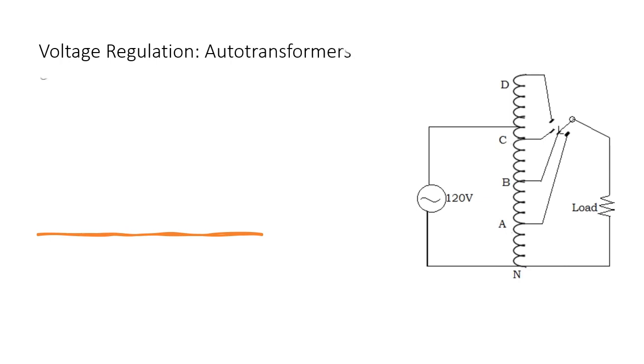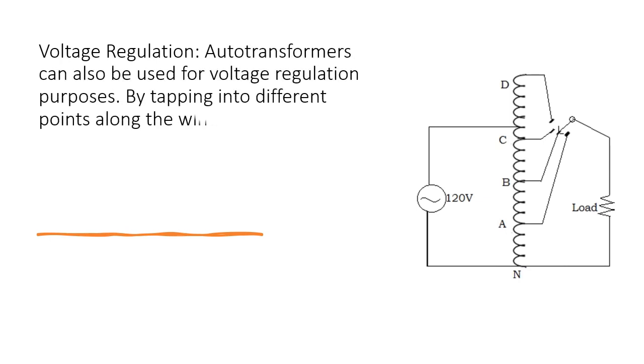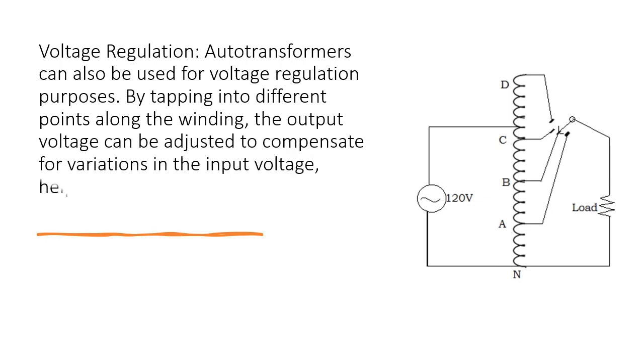Voltage regulation: Autotransformers can also be used for voltage regulation purposes. By tapping into different points along the winding, the output voltage can be adjusted to compensate for variations in the input voltage, helping to maintain a relatively stable output voltage.